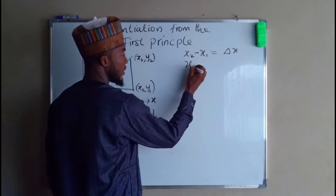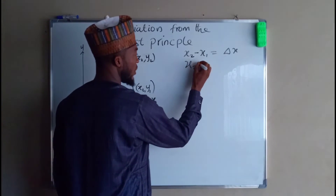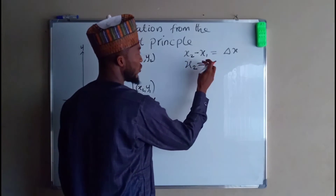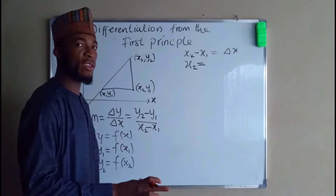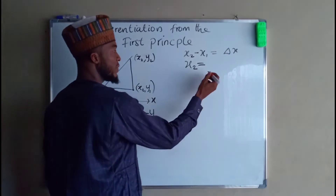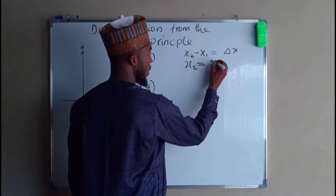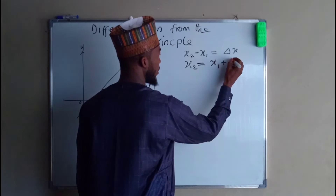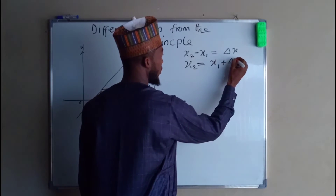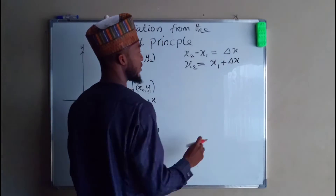Therefore, x2 is equal to — when you take x1 to the right-hand side, it becomes positive x1 plus the change in x.